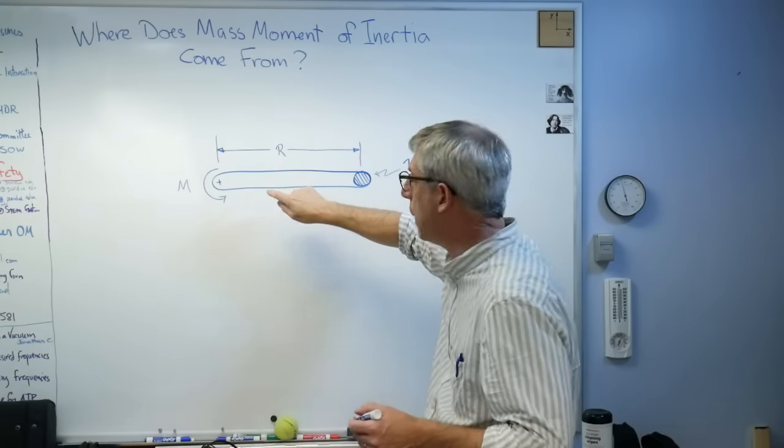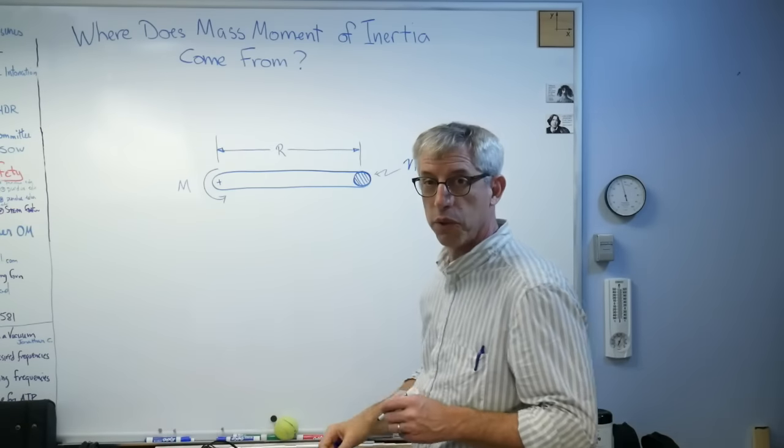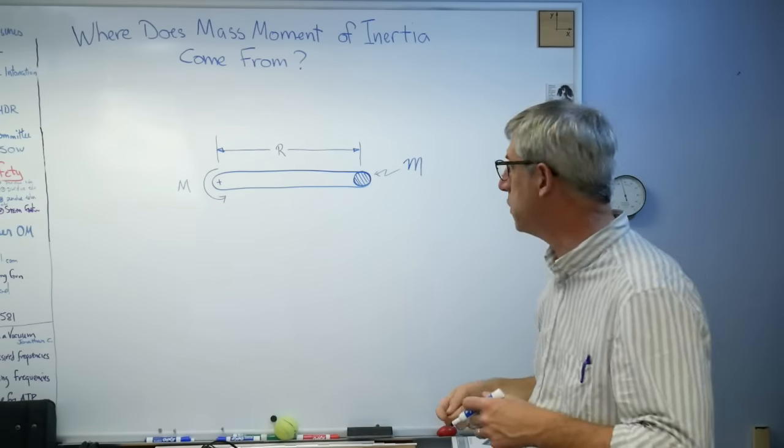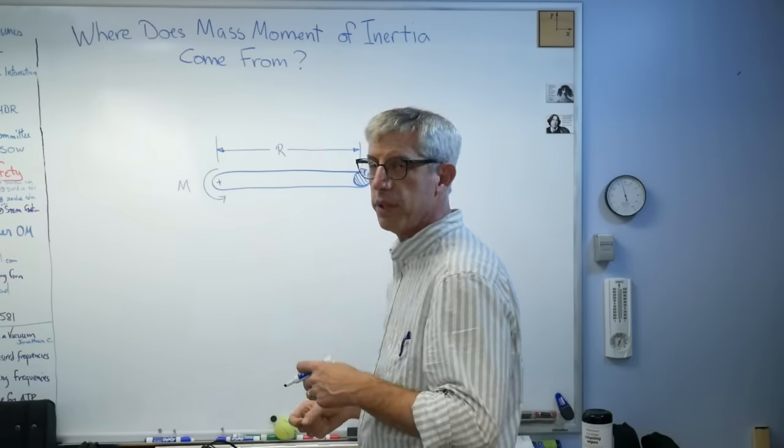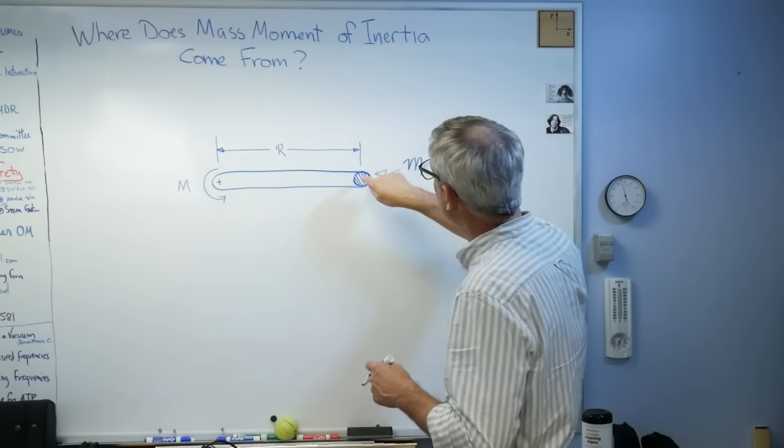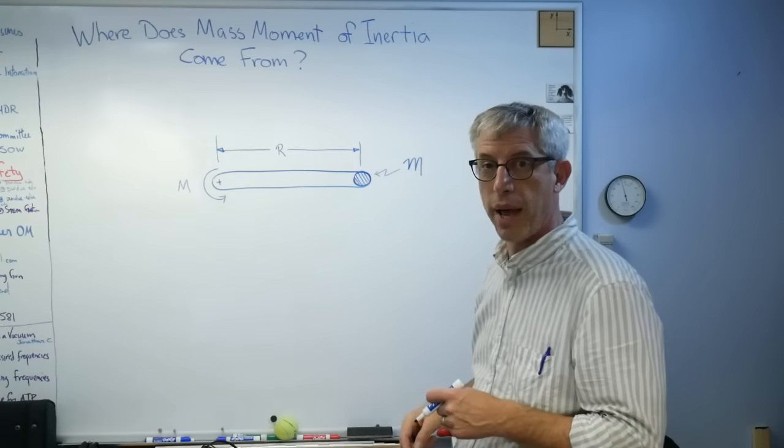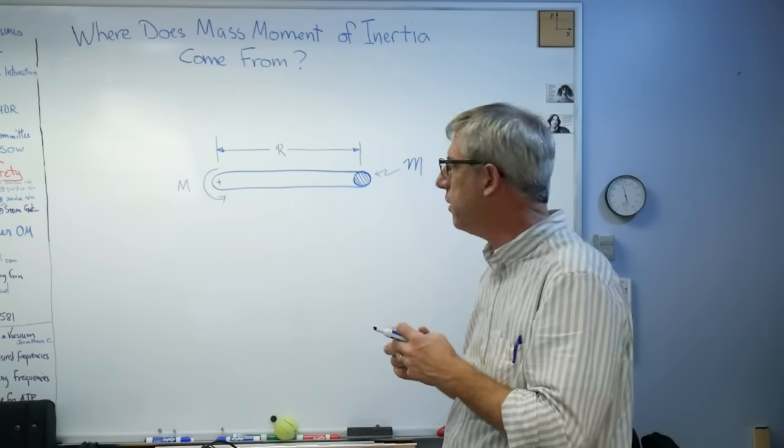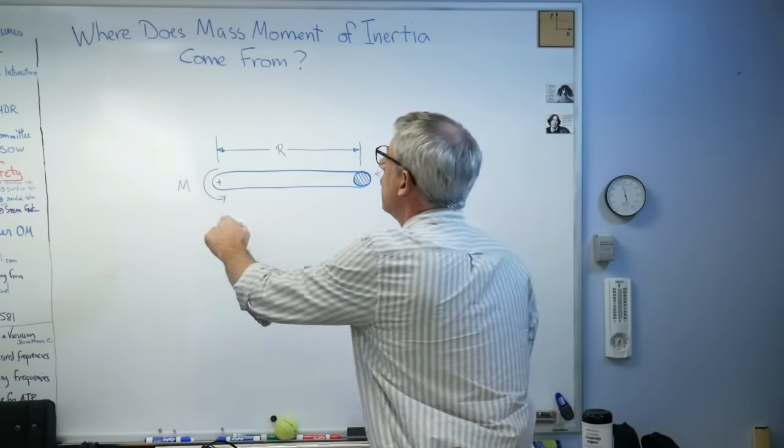I've got a bar whose length is R. It's rigid and massless because I got it from Amazon. The bearing's also frictionless so we don't have to worry about these ancillary effects. We're really only looking at the effect of that mass there. Just think of it as a lump of really dense metal, tungsten or something.